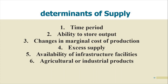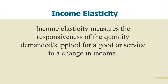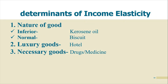The determinants of supply are: time period, ability to store output, change in marginal cost of production, excess supply, availability of infrastructure, and whether it is an agricultural or industrial product. If you have any doubts about these determinants, mention them in the comments section. Income elasticity is the responsiveness of quantity demanded or supplied for a good as per the change in income.